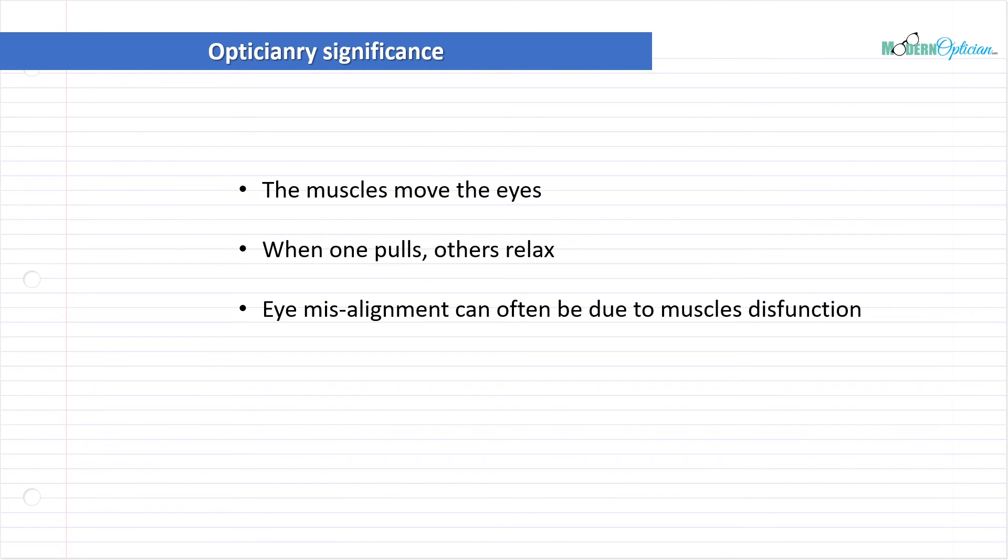Eye misalignment can often be due to muscle dysfunction. If you think about phorias and tropias, any kind of strabismus, any kind of misalignment of the eye, a lot of times it's due to muscle imbalance. Either a muscle was not properly formed during developmental stages, or maybe there was a muscle injury. It could be neurological as well. Whenever you see eye misalignment, the first thing that comes to mind is muscle imbalance or muscle dysfunction.